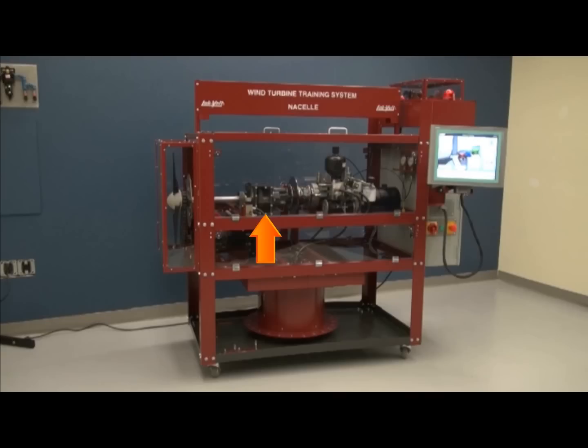The gearbox will increase the speed of the main shaft by about 40 times. Then, the output of the gearbox will be monitored with a speed sensor.